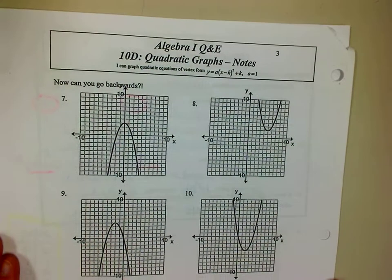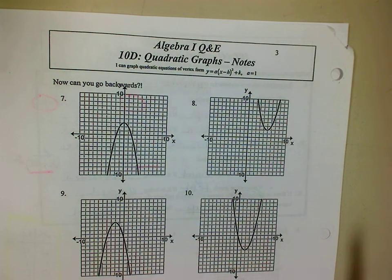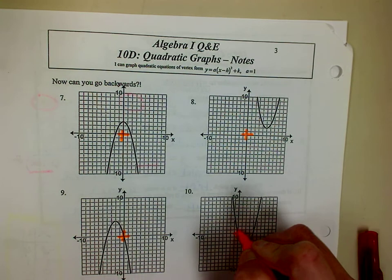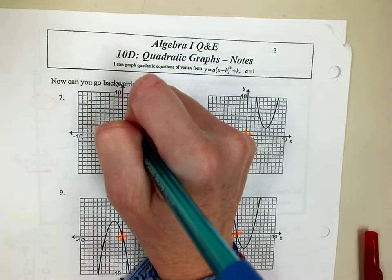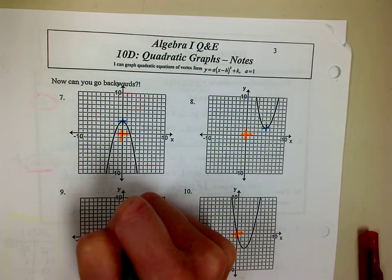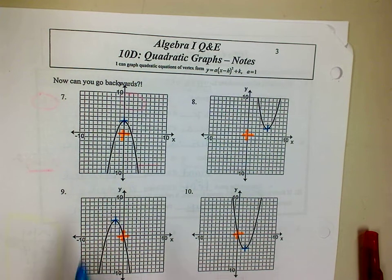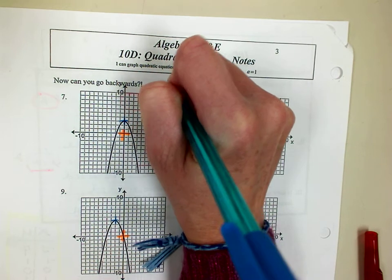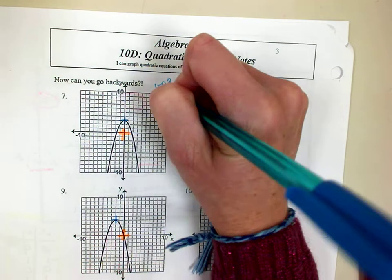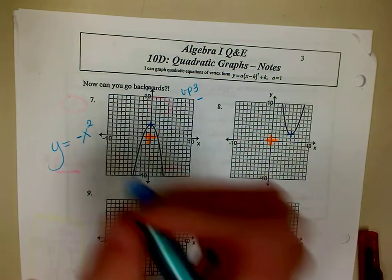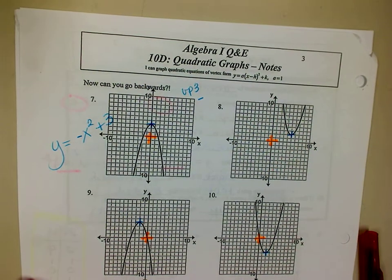Now we're going to do the opposite — I'm going to give you a graph and you're going to tell me the equation. First I'm going to point out where the origin is, then find the vertex. On this one, it looks like I just went up 3, and it's also upside down, which means I'm going to have a negative in my answer. So my answer is y equals negative x squared plus 3.